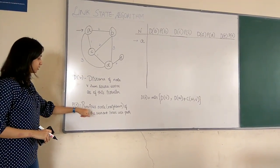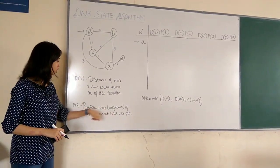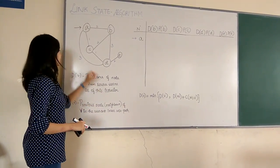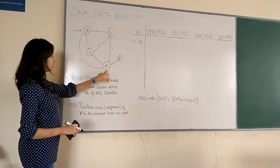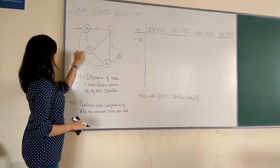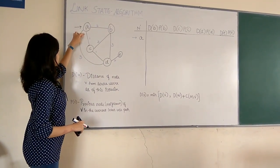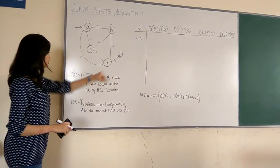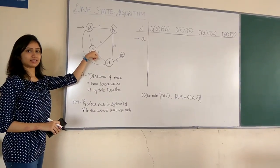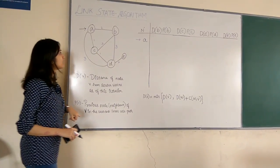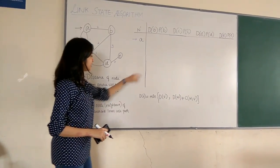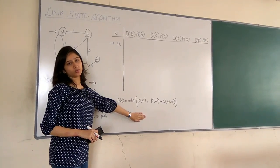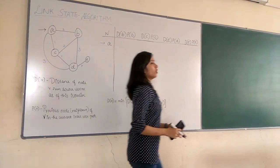P(V) is nothing but the previous node of V in the current least cost path. Say the least cost path to vertex D through C is 2, so the previous node would be C in this case. Now let me start filling the table — this is the formula that we use once we start filling the table.